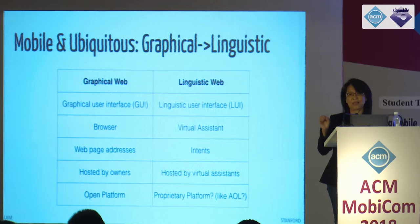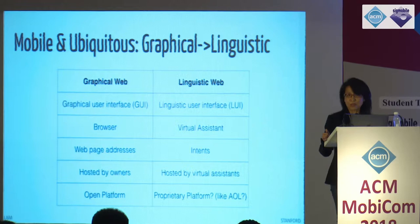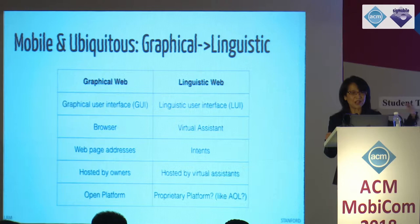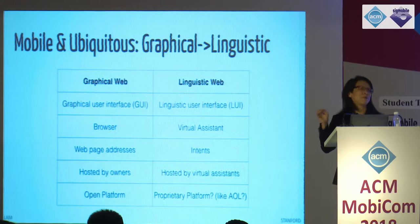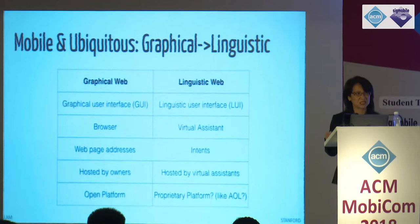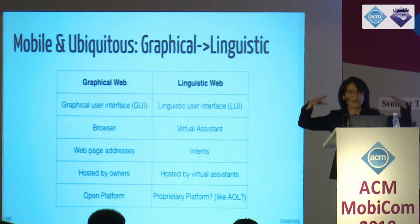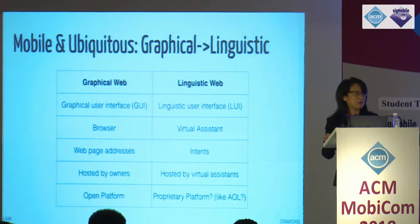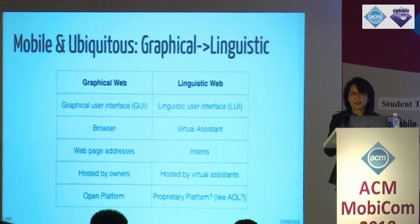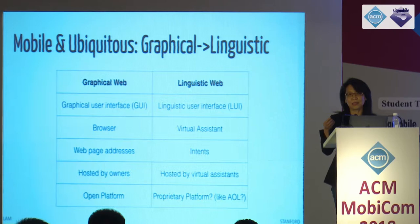Any future service will have a language component. With a graphical user interface, we're using the browser. With the linguistic user interface, we're talking about the virtual assistant. Instead of web pages, we're now going through intents. Amazon has 40,000 intents with 1,000 engineers putting them in. Google has 1 million functions. They're all busy putting language interfaces into their proprietary systems. Instead of web pages hosted by individual owners, these intents are hosted by the virtual assistants — really the beginning of a proprietary linguistic web.